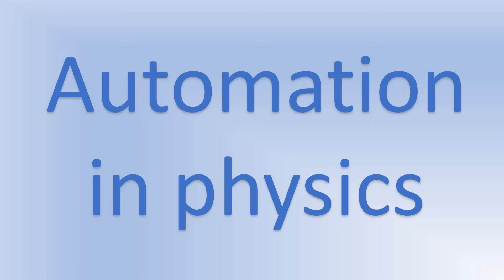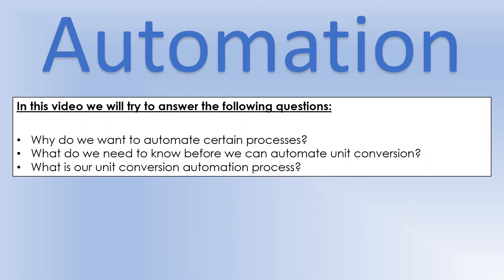This is the next in my series on reducing the amount of working memory things occupy in physics. This one we're going to talk about automation in physics — specifically about this idea of automation in the process of unit conversions. And then we're going to look at what process we're going to use to try and automate unit conversion.